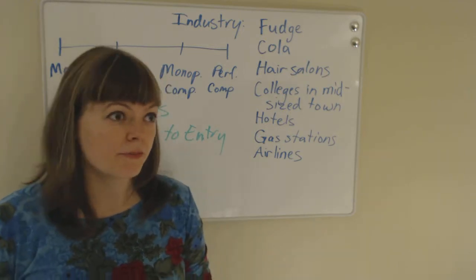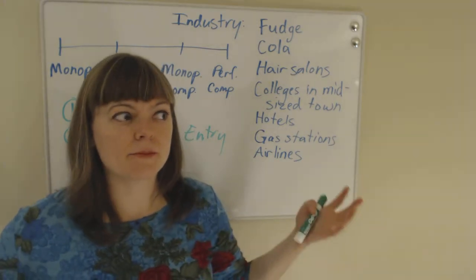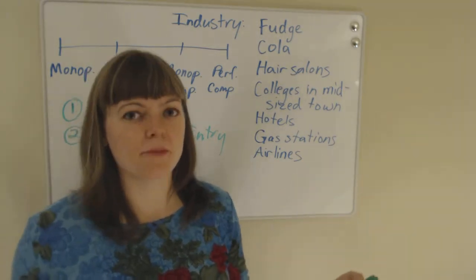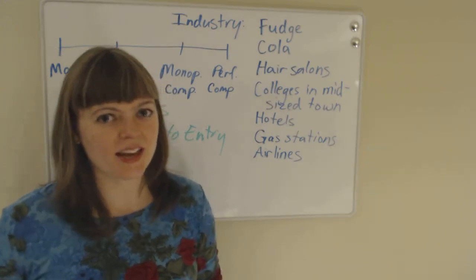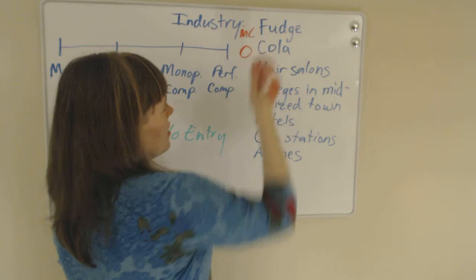So the barrier to entry in this industry is actually going to be advertising itself. If you want to be a new cola competitor, you're going to have to brand yourself by engaging in this big marketing campaign that small startup firms usually can't do. So this is going to be an oligopoly, and this is monopolistic competition.